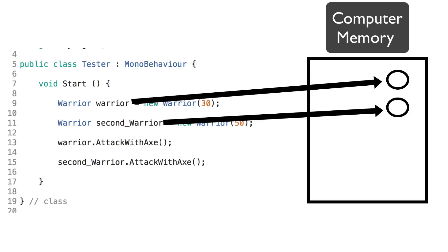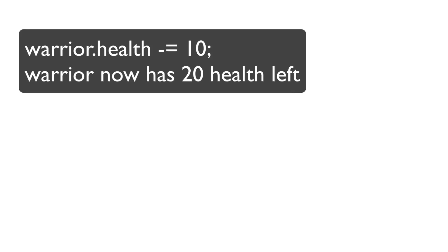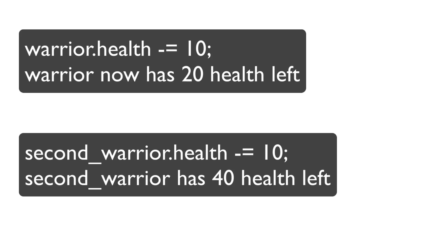Even with a parameter, if we create warrior with parameter 30 and secondWarrior with parameter 50, we have two separate objects at two separate spots in memory — the first with health 30, the second with health 50. If the first warrior takes 10 damage, he's left with 20 health. If the second warrior also takes 10 damage, he's left with 40 health. They are independent.